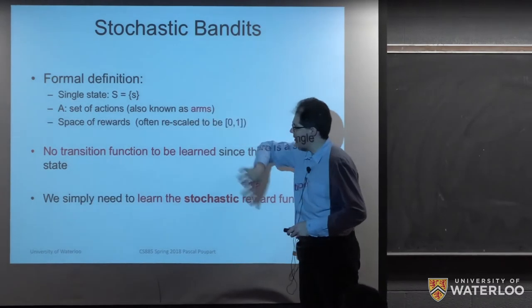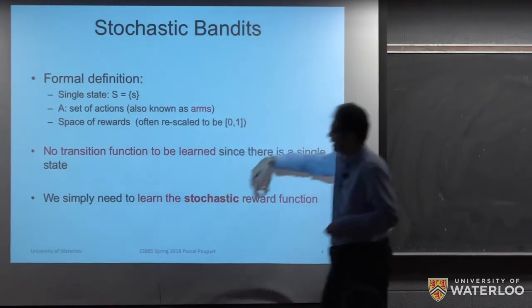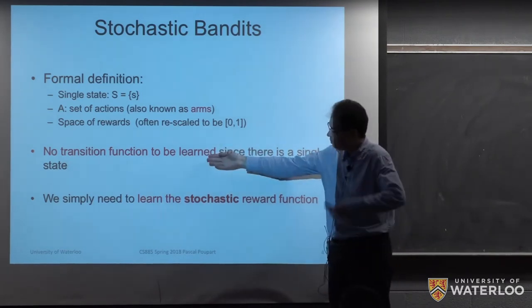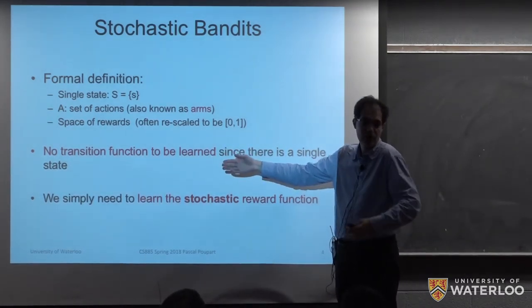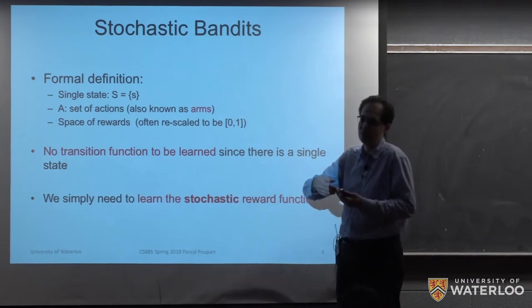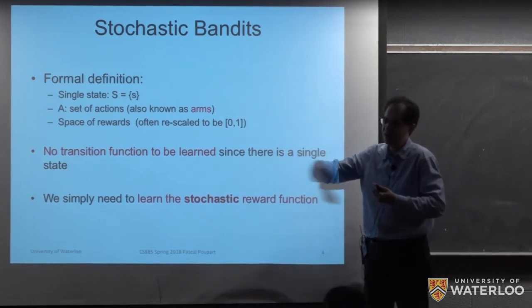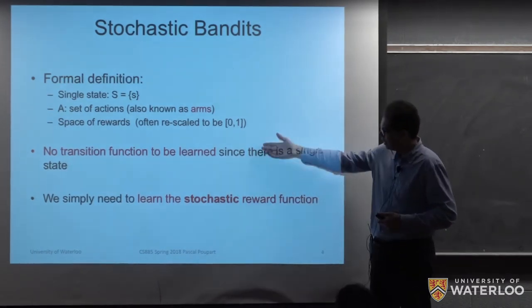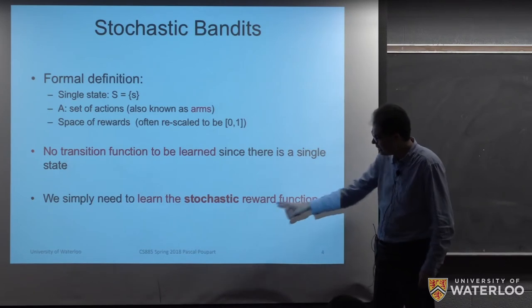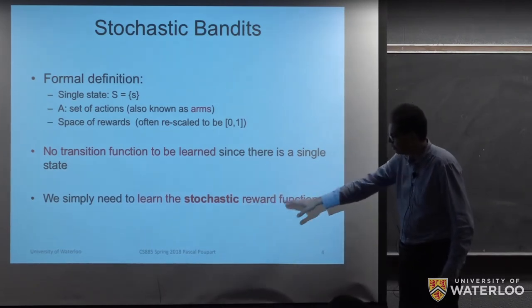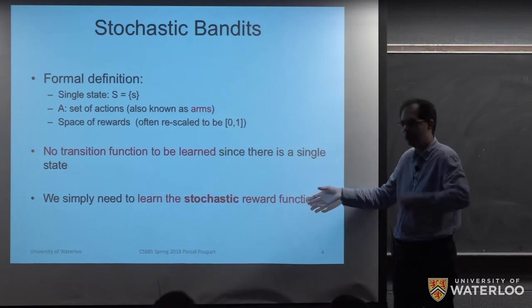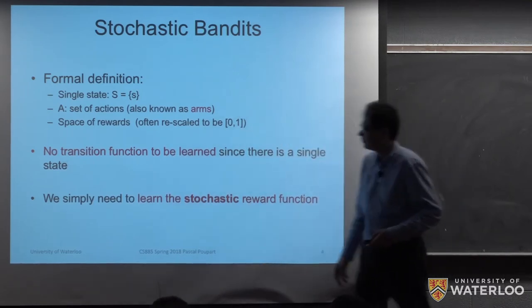For bandits, since there's a single state, we're always in that same state, so there's really no transition function. A major problem in reinforcement learning has been estimating the transition function or getting trajectory samples to understand future rewards. But in bandits it's much simpler — there is no transition. We're always in the same state, and what we focus on is learning a stochastic reward function: the rewards we obtain as a result of each action are still unknown.